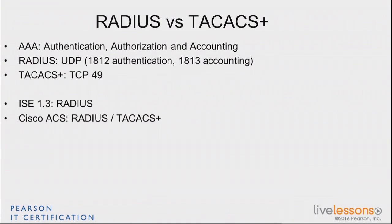The next generation of ISE also implements the TACACS function. But if you want to use a TACACS function while using ISE 1.3, you need another product. There is a Cisco product called the Cisco Access Control Server, ACS, that is both a RADIUS and a TACACS server, and you would use that for the TACACS side of things if needed. Configuring TACACS is anyway beyond what you need to know for the CCNA level.